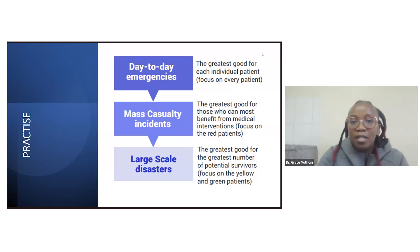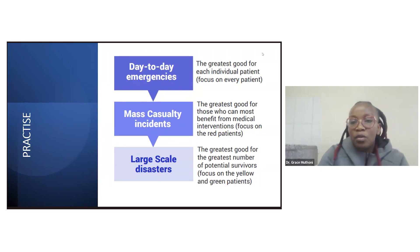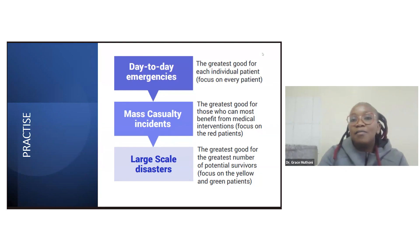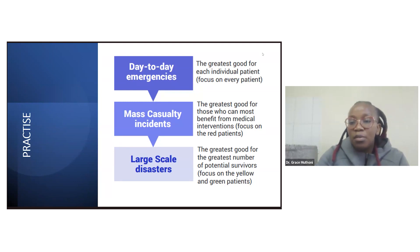For large-scale disasters, the purpose of triage is to do the greatest good for the greatest number of potential survivors. For large-scale disasters, your focus will mainly be on your yellow and green patients — those who are not very critically injured — with minor or moderate injuries who don't need as many resources as your red patients.